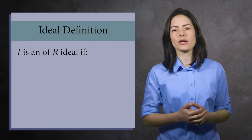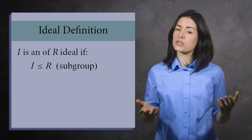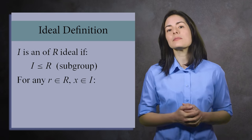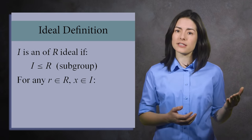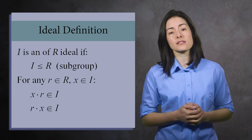So an ideal I of a ring R is a subgroup of R with two additional properties. For any element r in the ring, and x in the ideal, both x·r and r·x are in the ideal.